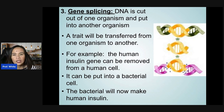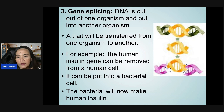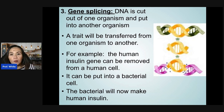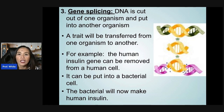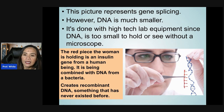Let's move to gene splicing. Gene splicing is when DNA is cut out of one organism and put into another, transferring a trait from one organism to another. For example, the human insulin gene can be removed from a human cell and put into a bacterial cell, which will then make human insulin. This is done with high-tech lab equipment since DNA is too small to hold or see without a microscope.